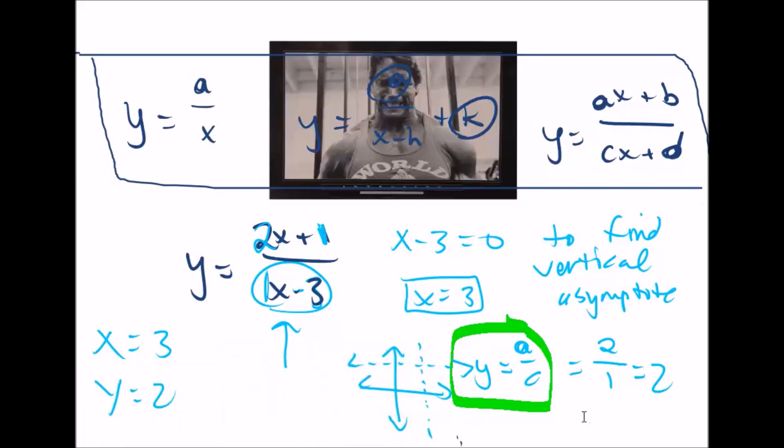So if we want to find the domain and range, of course, domain is all the x values except for 3. And the range is all the y values except for 4.